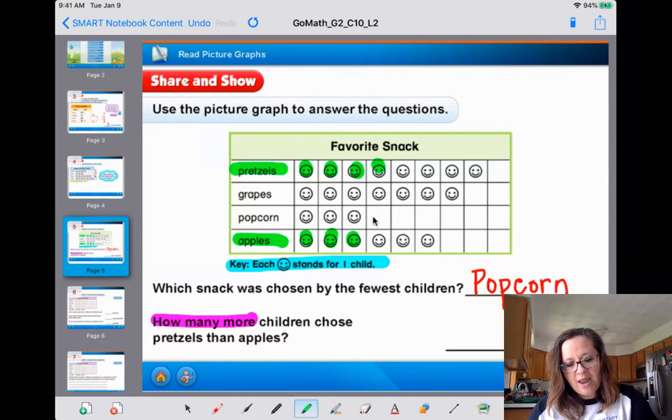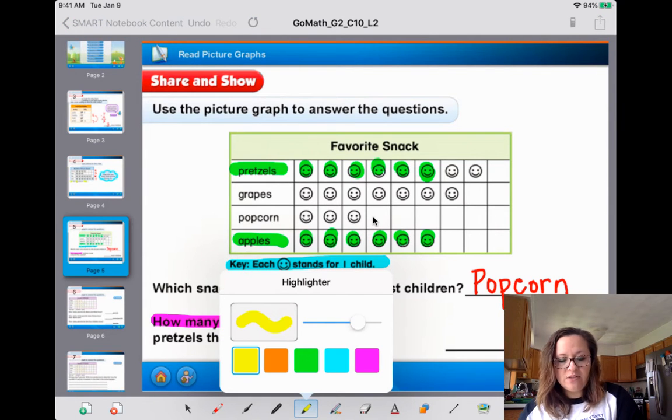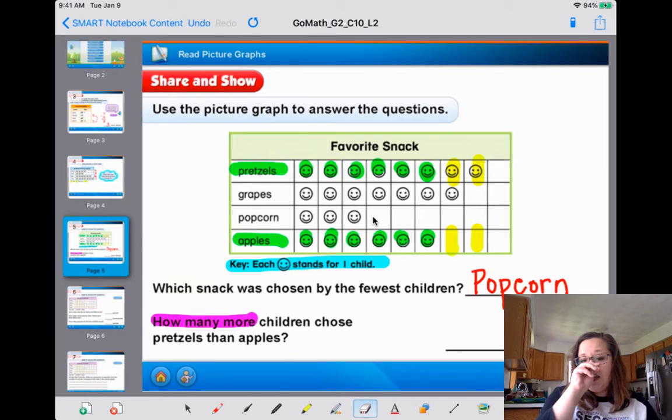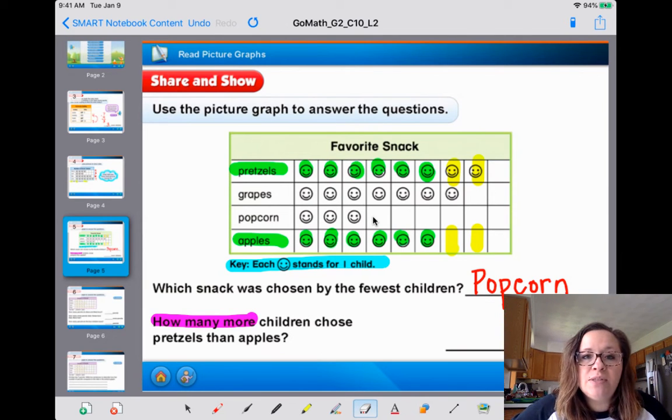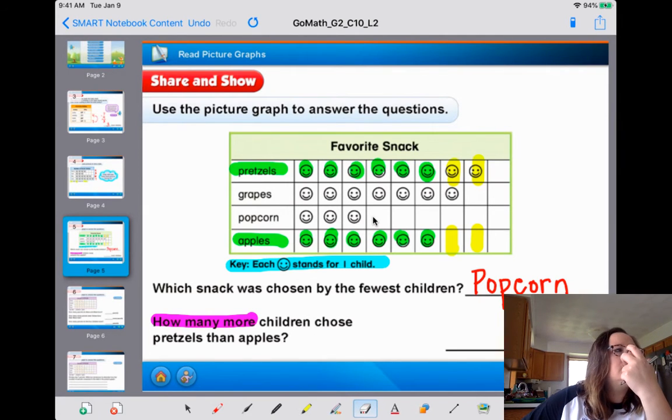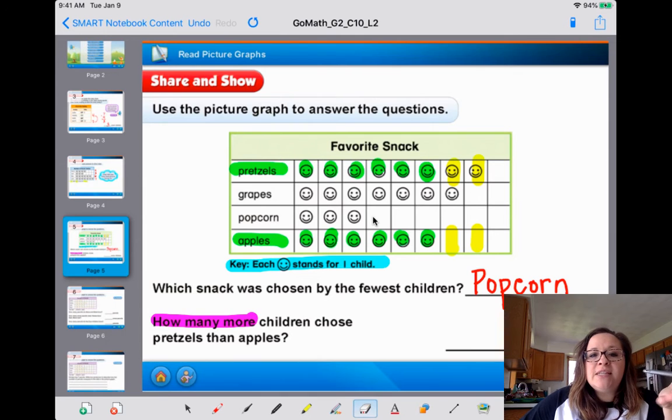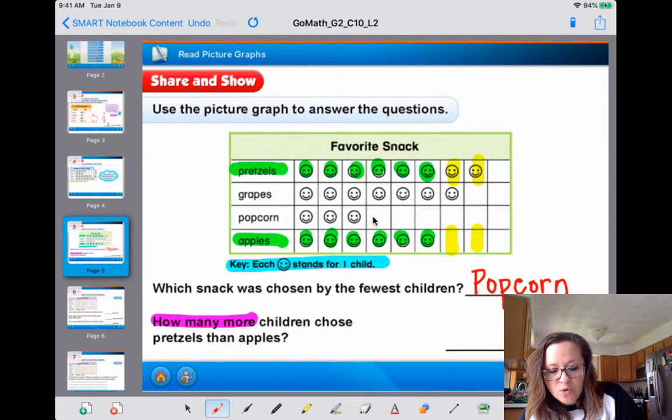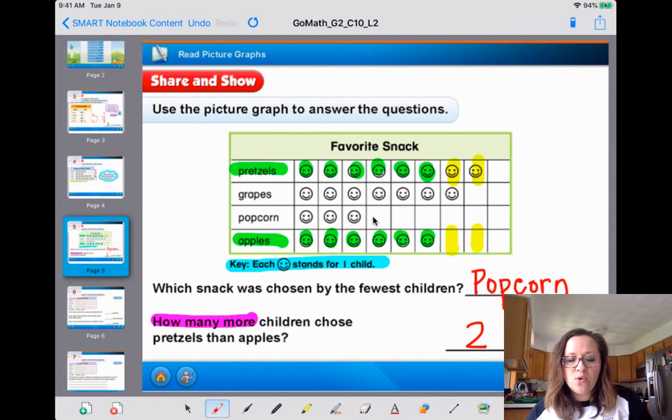So how many children chose pretzels than apples? So we're only worried about pretzels and apples. So now look at this. You know what I like to do? Notice how they have the same, right? Same. And I like to stop when they don't have the same squares filled in. Look that's where it stops. Do you know that they now pretzels has, look at this. Do you see how there's two more smiles in that one and there's none in the apples? I did it in yellow. Do you see that? But how many more children chose pretzels than apples? If you can see in green, that's the same amount, right? In yellow, that's how many more? There's two more. Two more children chose pretzels over apples, right?